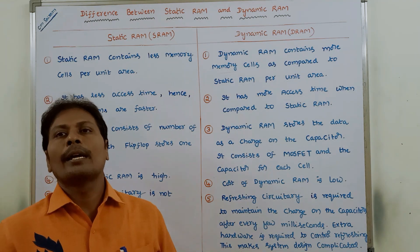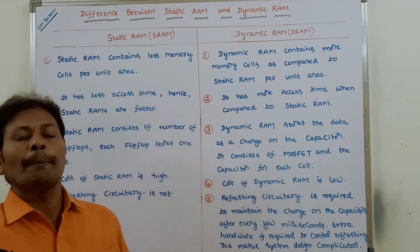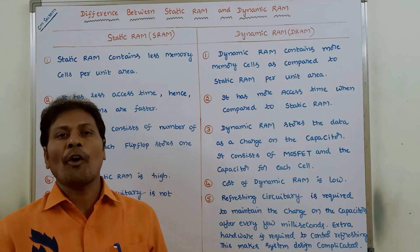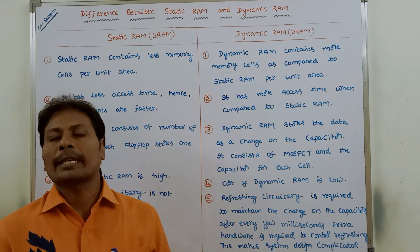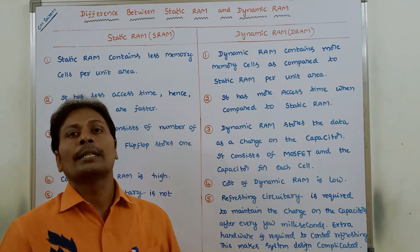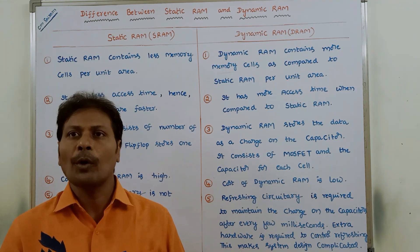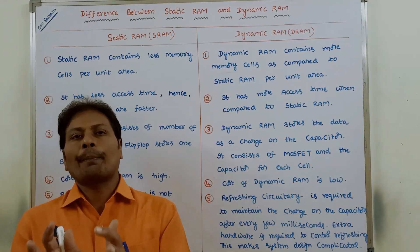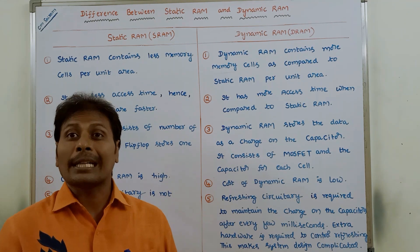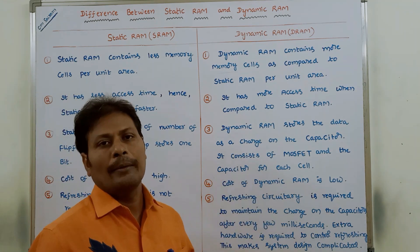The third difference: static RAM is a collection of flip-flops. Each flip-flop can store only one bit of information. Whereas in the case of dynamic RAM, dynamic RAM stores data as a charge on a capacitor. Hence, the dynamic RAM contains a transistor and a capacitor for each cell.